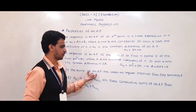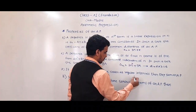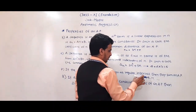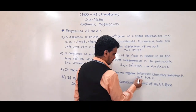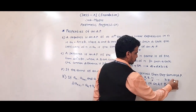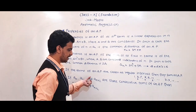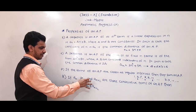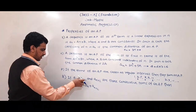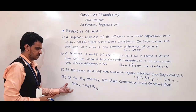The seventh property: if terms of an AP are chosen at regular intervals, they also form an AP. For example, from 1, 3, 5, 7, 9, 11..., taking every alternate term (i.e., 3, 7, 11...) also gives an AP. The eighth property: if An, A(n+1), A(n+2) are three consecutive terms of an AP, then 2×A(n+1) = An + A(n+2).